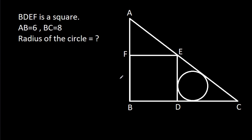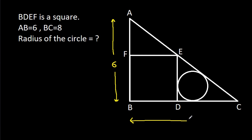In this video, we have been given that BDEF is a square and AB is 6, BC is 8. Then we have to find the radius of the circle.